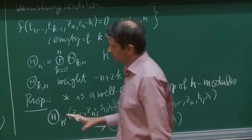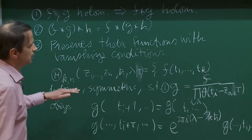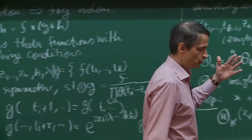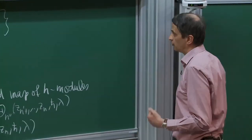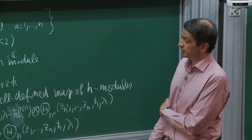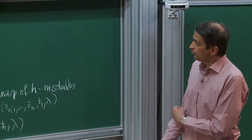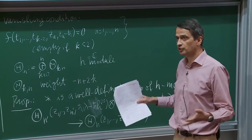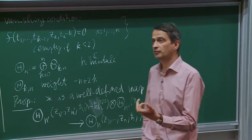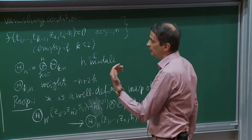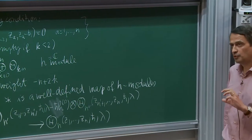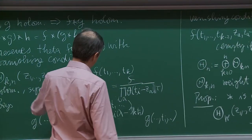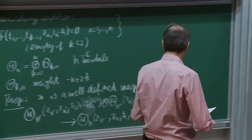In the generic case — z_1,...,z_n generic — this will be a functional realization of a tensor product of evaluation representations for SL2. Without the vanishing condition you get something isomorphic to the tensor product of Verma modules or dual Verma modules. With the vanishing condition, you take the irreducible subspace, giving the tensor product of two-dimensional representations.